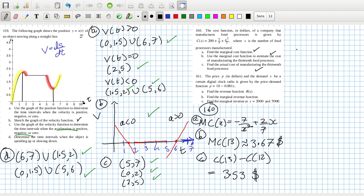That's equal to $3.53. Yeah, it's not bad, actually not bad. Find the marginal cost. Okay, good. 161. The price p in dollars and the demand x for a certain digital clock radio is given by the price-demand function. Find the revenue function.